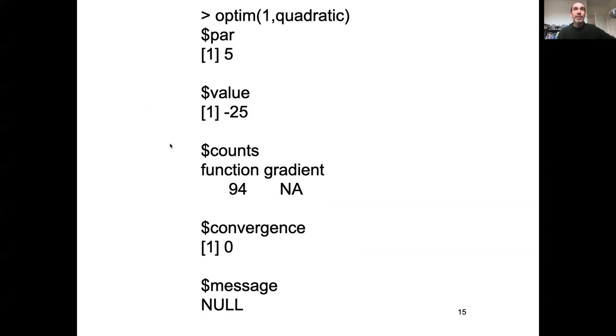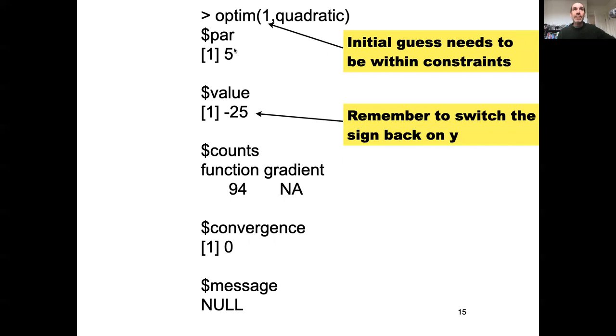So what would come out of this? Let's say my initial guess was 1. It would come back that the best value is at 5. And it would then give me my value there. Remember, I need to switch the sign back since I changed the sign to do the minimization.